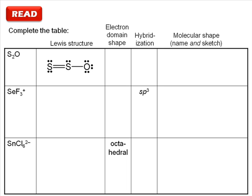All we're told in this question is to complete the table, so be sure to carefully read the table as well. We have to draw Lewis structures, provide the electron domain shape, note the hybridization, and sketch and name the molecular shape of each of S₂O, SeF₃⁺, and SnCl₆²⁻. The table clearly defines our plan for us, but you should note that some of the cells are prefilled, and these give you clues as to how to proceed.